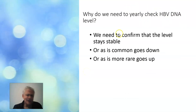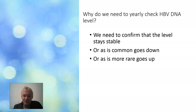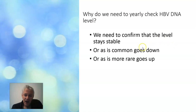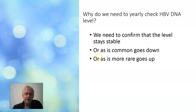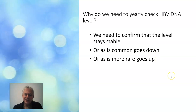Why do we check yearly? First, to confirm the level stays stable — and 99% of the time it usually stays pretty much the same. Sometimes it goes down; it's actually more common for it to go down over the years, as the immune system gets a better grip on the virus. I've seen levels go from a quarter of a million to a hundred thousand to thirty thousand. More rarely it might go up a little, so we like to keep a check.